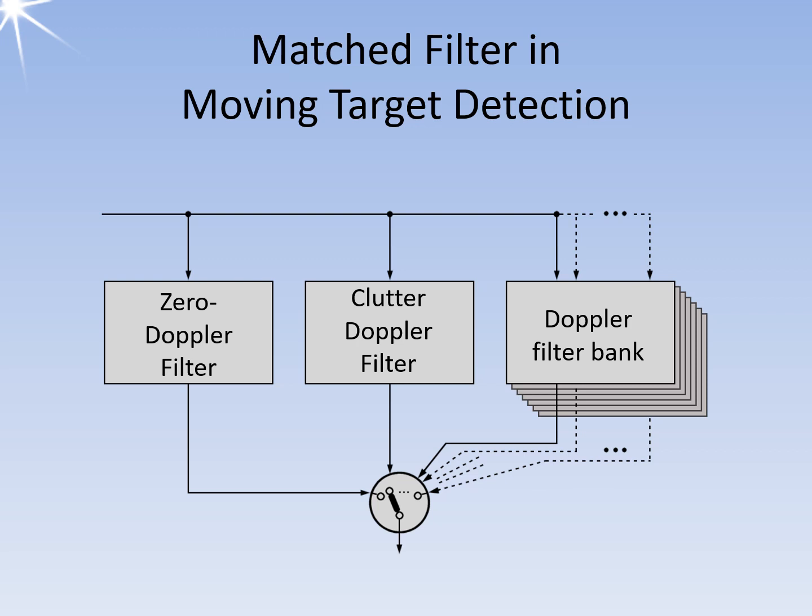The Doppler filter bank consists of filters with narrow bandpass characteristics, each detecting a particular target velocity. The switch is now a multiplexer, which passes all signals to the computer. It is also possible for several filters to respond to a target at the same time. Only the computer then decides what the target is by comparing the detected characteristics of the echo signal with the data in a database.